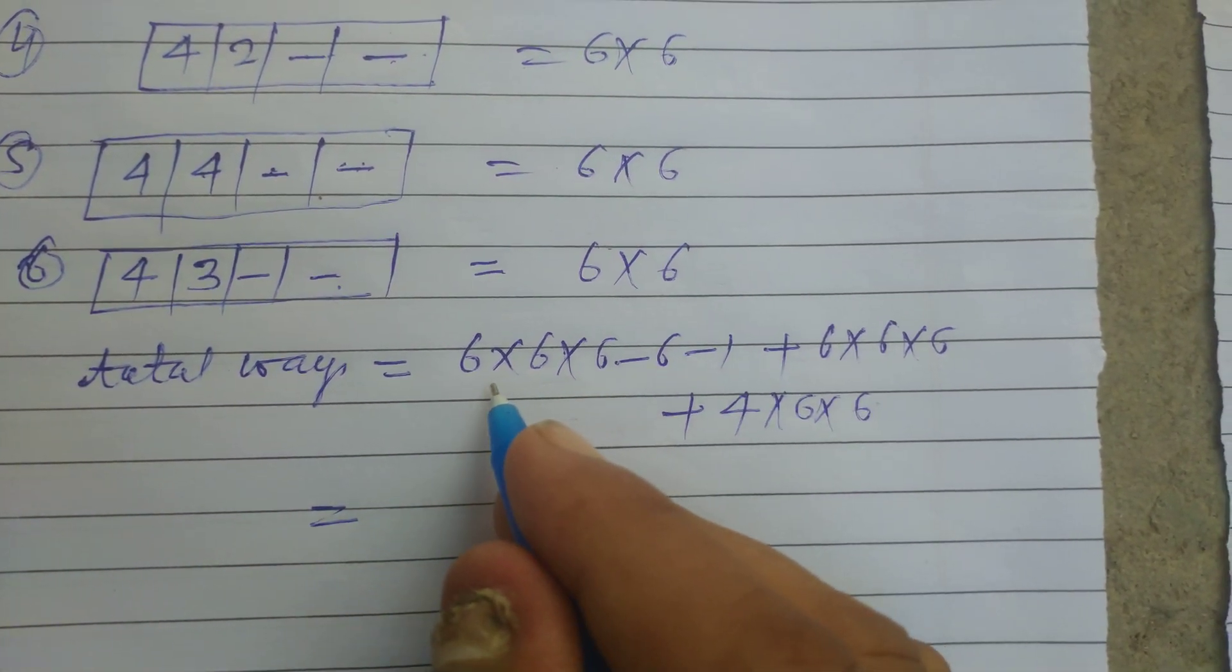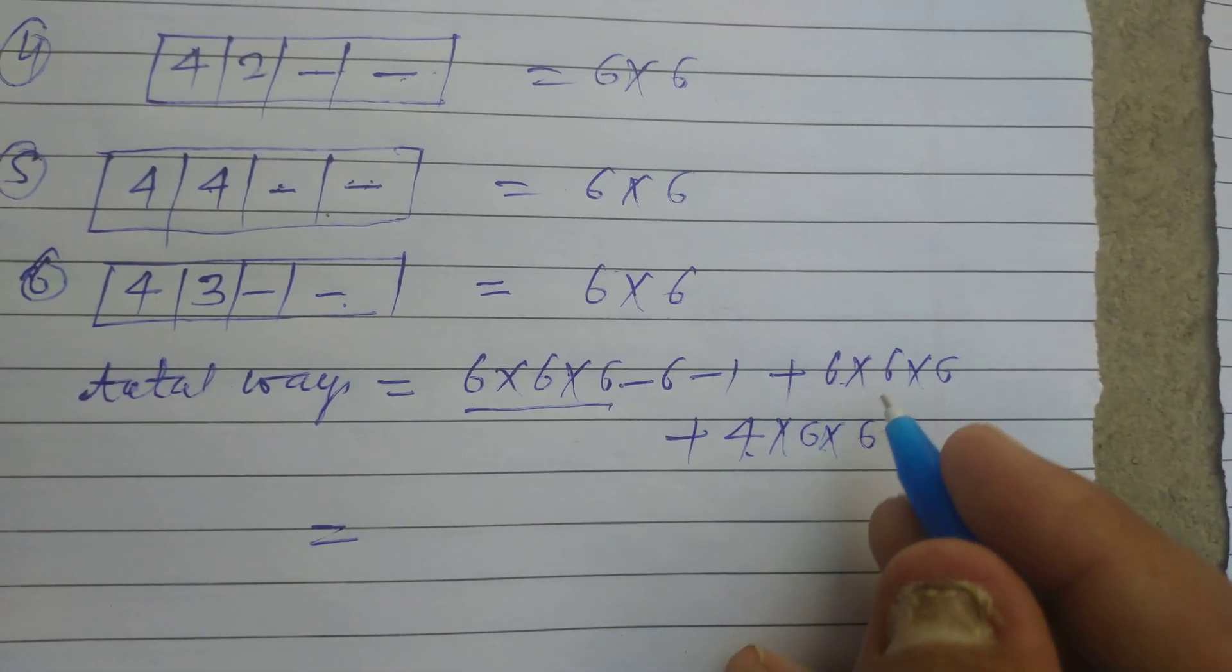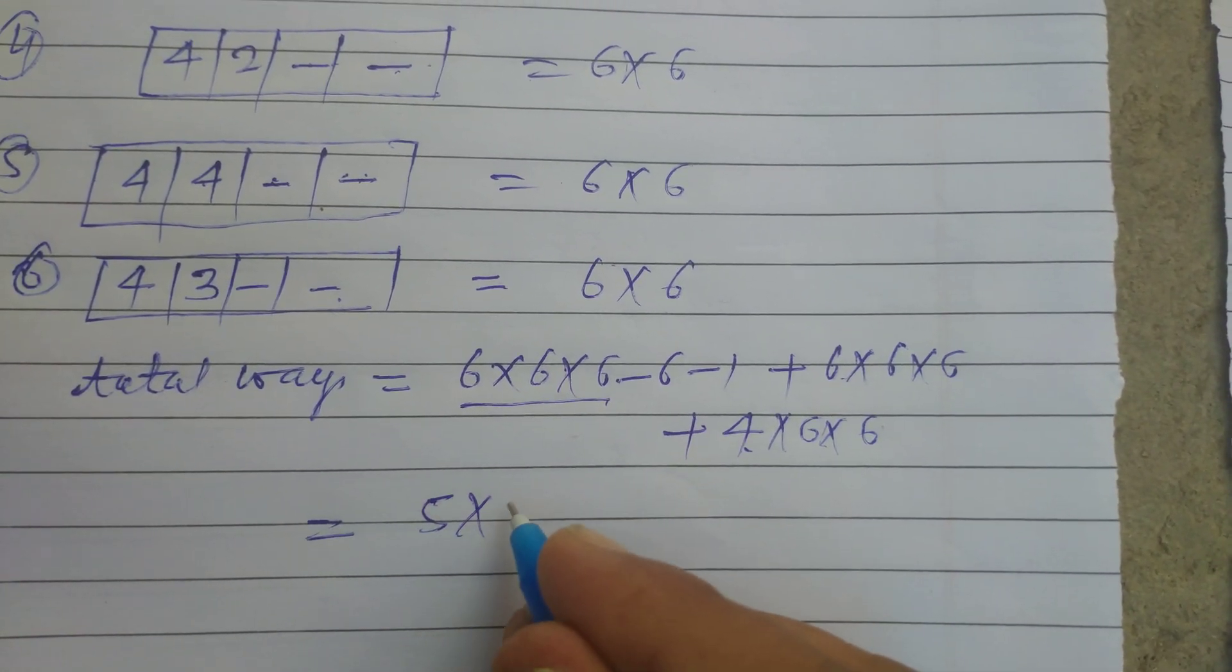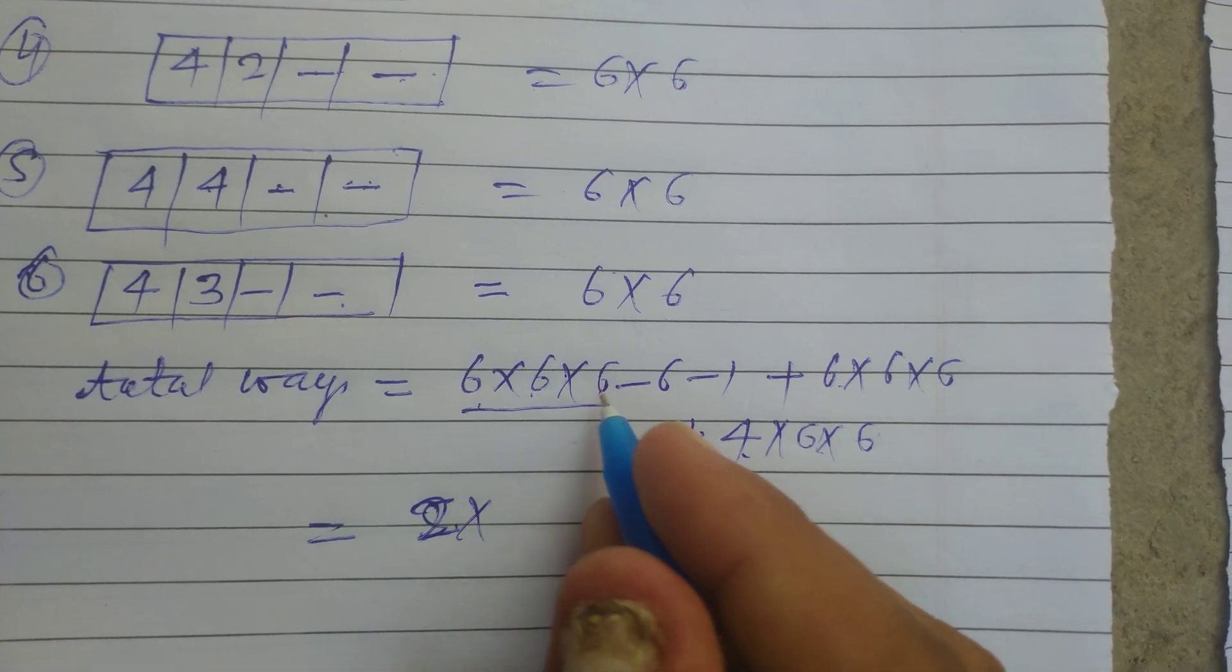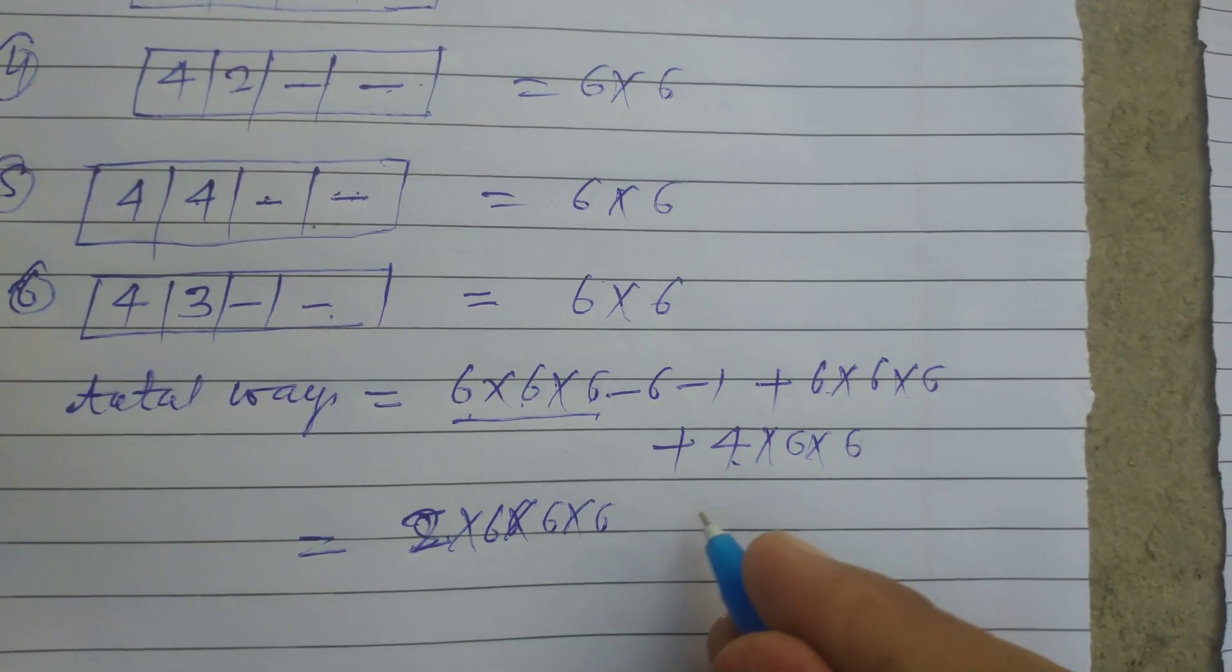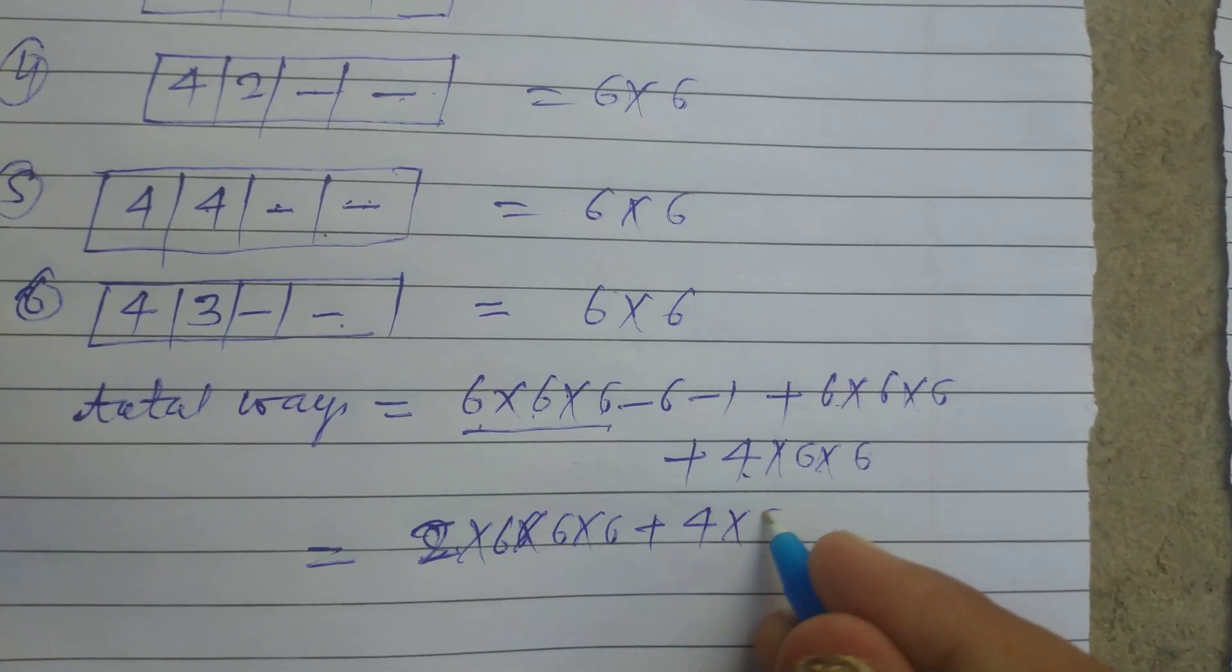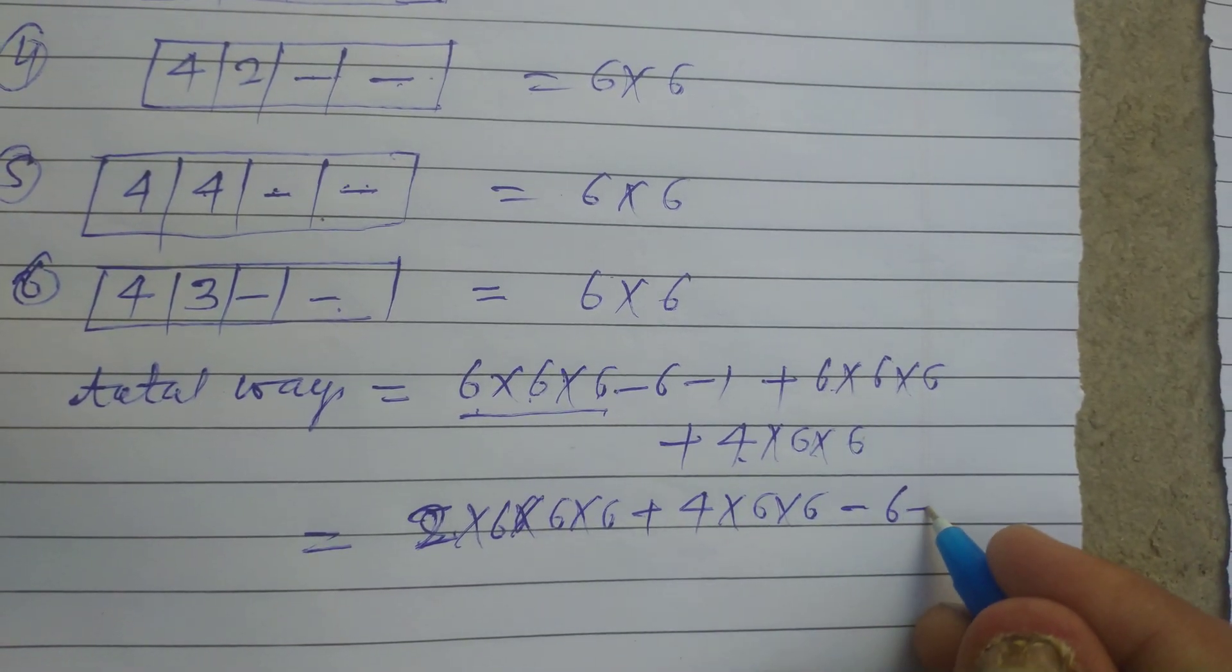Now we take common from here, that's 4 plus 1, this is 5 into 6, 6, 6, 6, here. And 4, 6 into 6, minus 6, minus 1.